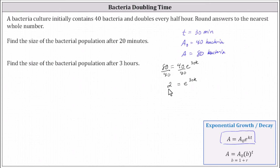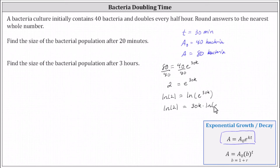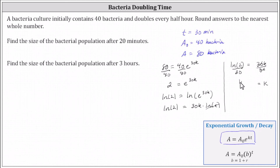Notice we have two on the left because we're using 30 minutes for the time, which is the doubling time. To find k, since we have the doubling time, we could have used a sub zero equals one and a equals two — as long as a is twice the amount of a sub zero, we can determine k. To solve the exponential equation, we take the natural log of both sides, giving us ln(2) equals ln(e^(30k)). Applying the power property of logs gives us ln(2) equals 30k times ln(e). Since ln(e) equals one, the equation simplifies to ln(2) equals 30k. Dividing both sides by 30, the exact value of k is ln(2) divided by 30.